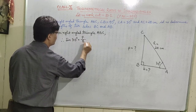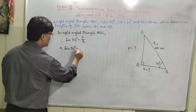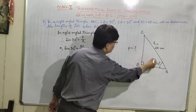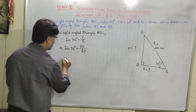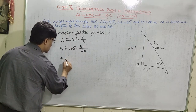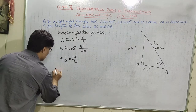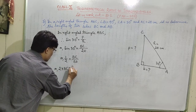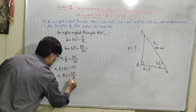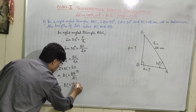Sine 30 degrees equals BC divided by 20. The value of sine 30 degrees is half. So half equals BC divided by 20. By cross multiplication: 2 into BC equals 20, therefore BC equals 20 divided by 2, which means BC is equal to 10 centimeters.